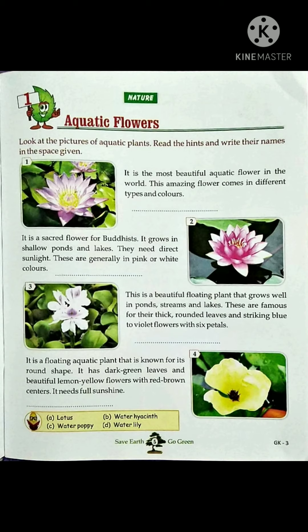Next: it is a sacred flower of Buddhists. It grows in shallow ponds and lakes and needs direct sunlight. These flowers are generally in pink and white colors.